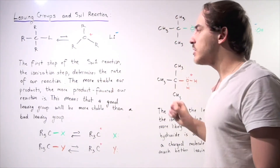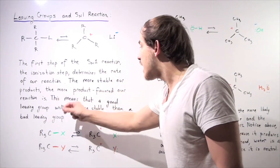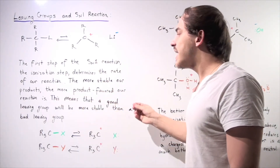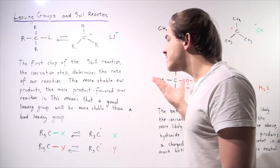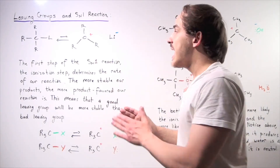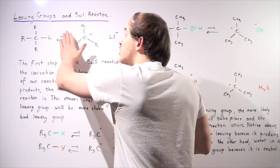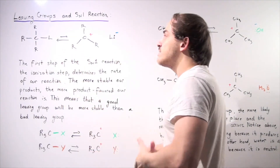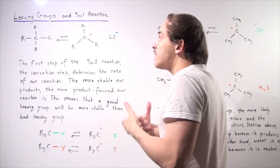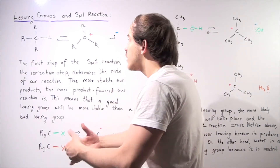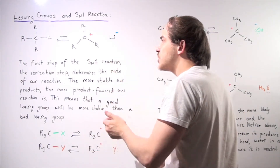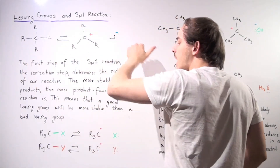The more stable our products, the more product-favored our reaction is. This means that a good leaving group will be more stable than a bad leaving group. If this leaving group is a good leaving group, that means it is very likely to detach. So the better the leaving group, the more stable it is, and the more likely our reaction lies towards the product side.